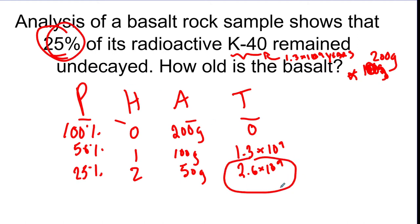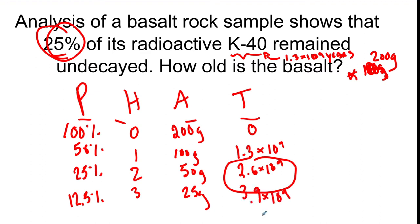If they asked for 12.5%, you'd do another half-life: that's three half-lives total, 25 grams, and 3.9 × 10⁹ years. Use the PHAT chart to figure out whatever you need. If they ask how many half-lives it takes to get to 2.6 × 10⁹ years, the answer is 2.